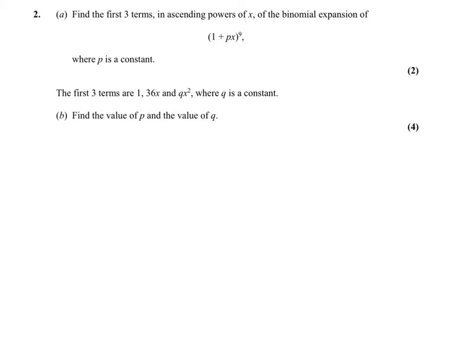Question 2. It says find the first 3 terms in ascending powers of x of the binomial expansion of this here, where p is a constant. So the first term would be 1 to the power 9. The second term, remember it's n factorial over n minus r factorial times r factorial, which is sometimes written as nCr.